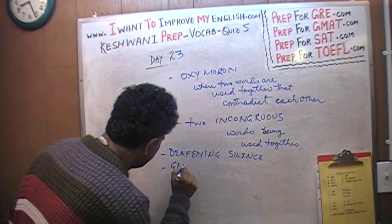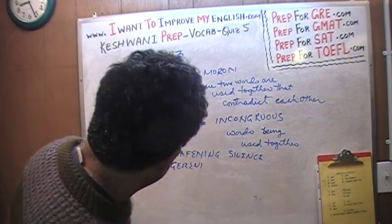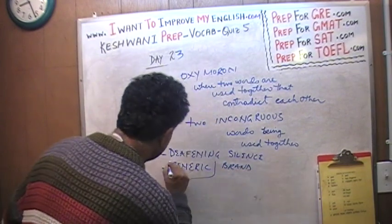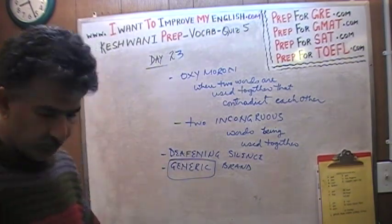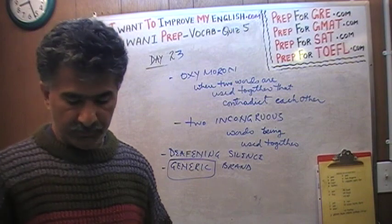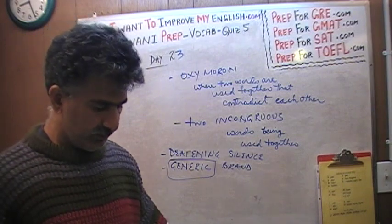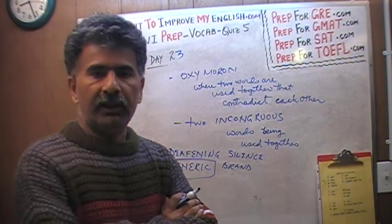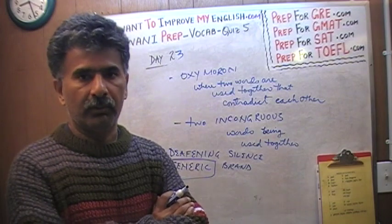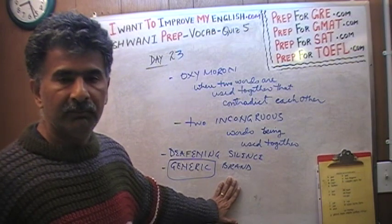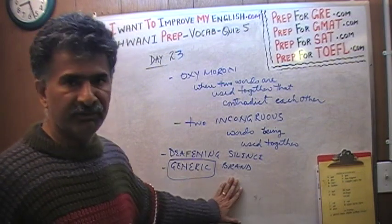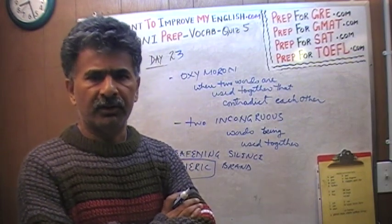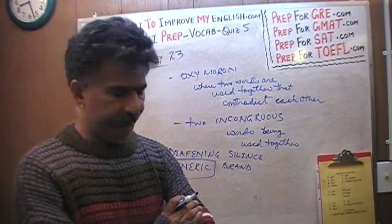Another example is 'generic brand.' Generic simply means not specific, general — not carrying a brand name. So if something has no name, how can it be a 'generic brand'? The expression is incongruous. People go in the store and ask for a generic brand of cigarette, but there is no such thing — if it were generic, it wouldn't carry a brand; and if it had a brand, it wouldn't be generic.